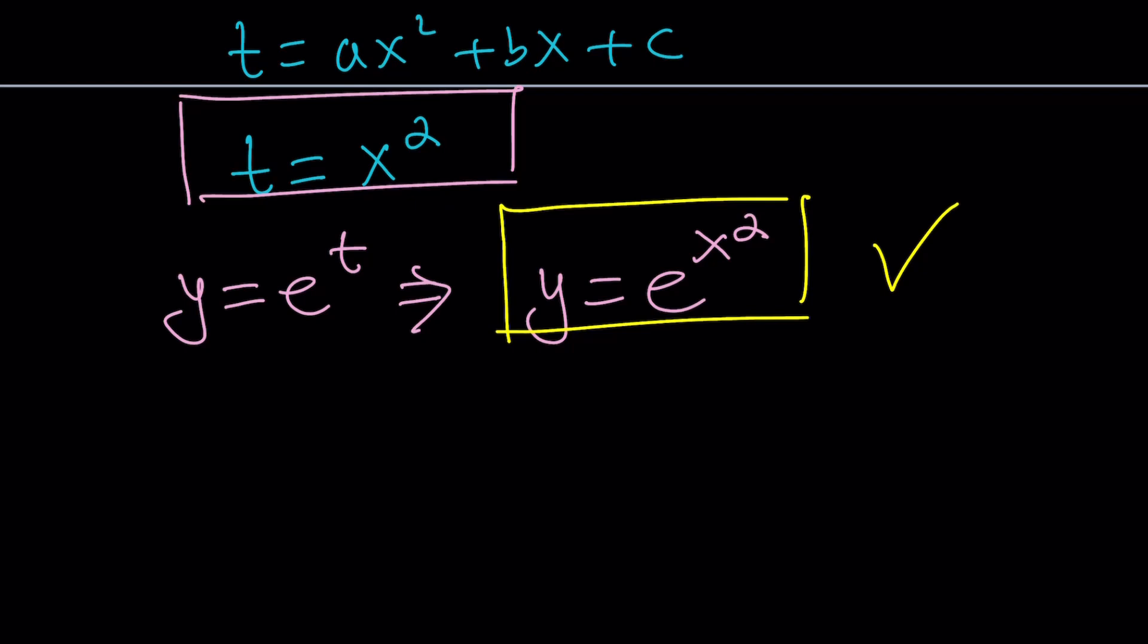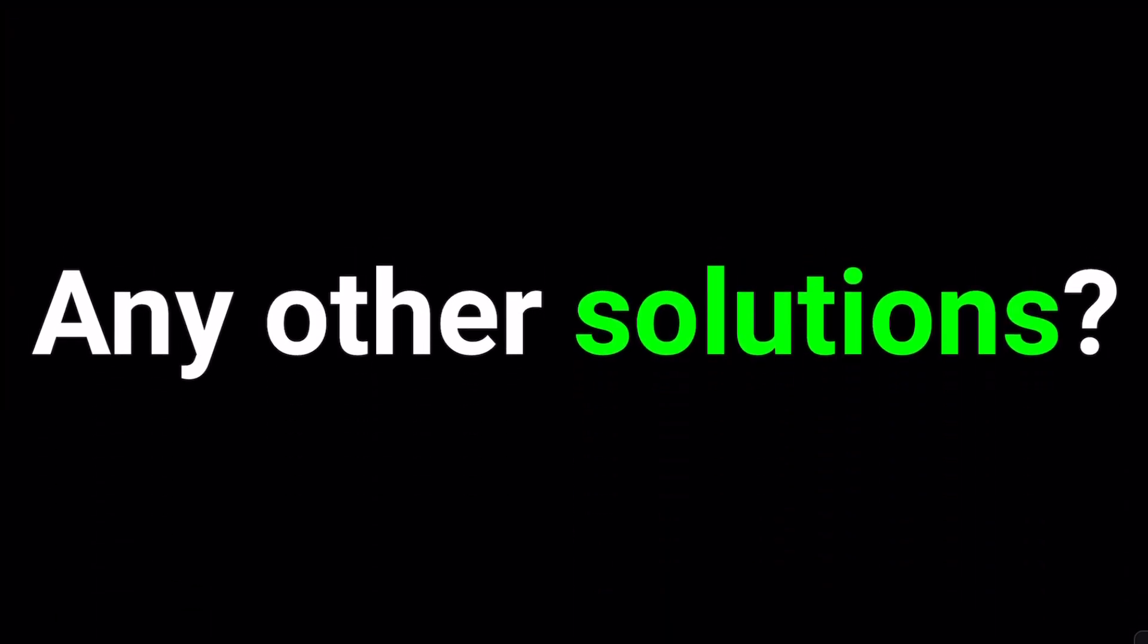But the million dollar question is, could there be another solution? I'm asking because we have a nonlinear differential equation. Remember, we had (t')² + t'' = 4x² + 2. So if you try to solve this equation, shouldn't you get more than one solution? What do you think? Let us know in the comment section down below.